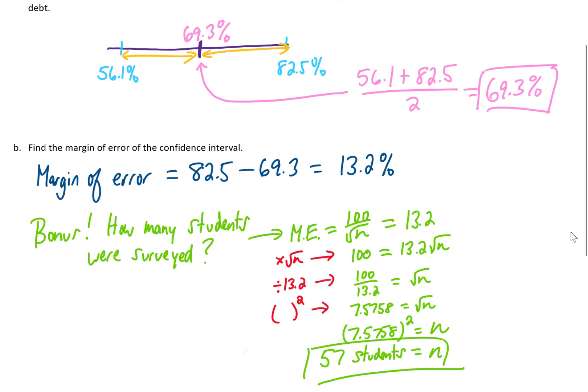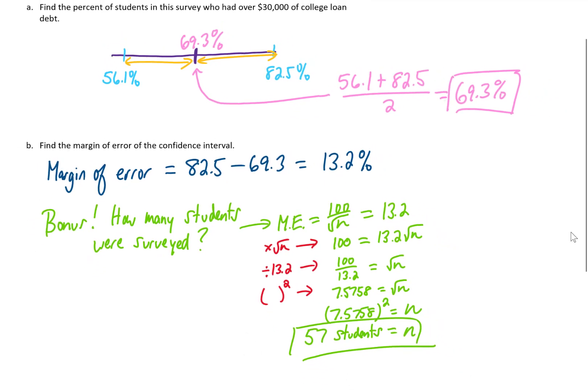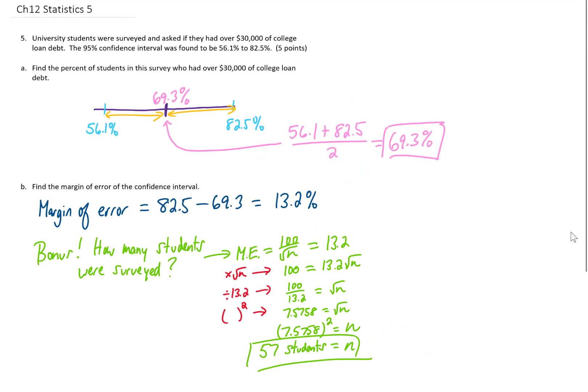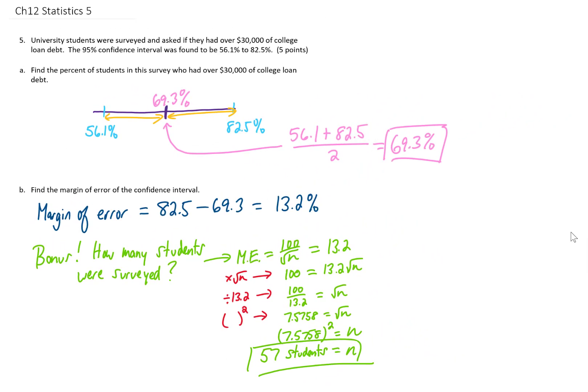So if we give a survey to 57 people, the margin of error in that survey is going to turn out to be 13.2%. I hope this helped you out.